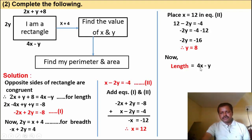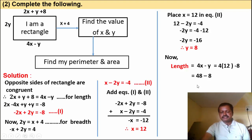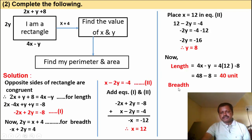Putting x equal to 12 and y equal to 8: 4 into 12 minus 8 equals 48 minus 8, which is 40 units. So length is 40 units.